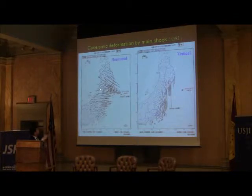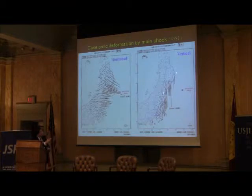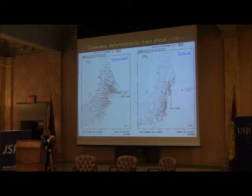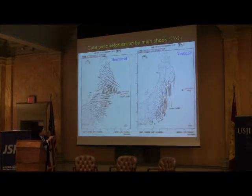This caused induced seismicity over a wide area of east Japan. The vertical deformation on the Pacific side shows subsidence of several tens of centimeters. The largest subsidence is observed at one point — more than 1 meter — causing difficulty for people living in the coastal region. It's a permanent depression.